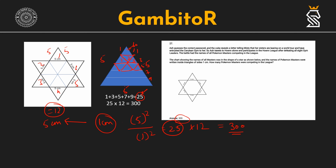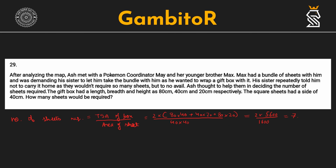Moving on to the next question — a very easy question. We have a box of side length 80 × 40 × 20 and we have to find the total number of square sheets of side length 40 that will cover it. We compute the TSA of the cuboid divided by the area of one sheet and we get the answer: 7.